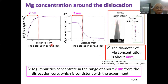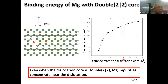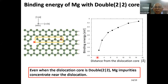We estimate the magnesium concentration based on the grand canonical ensemble with the binding energy. We find that magnesium impurity concentrates within a range of 2 nanometers from the dislocation core, which is consistent with the 3D atom probe tomography experiments reporting 4 nanometers — the two values are approximately the same order. We can conclude that the dislocation tends to attract magnesium impurities.